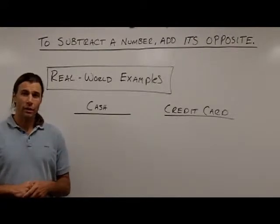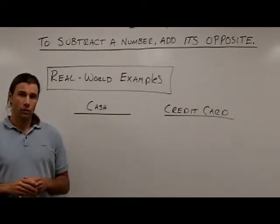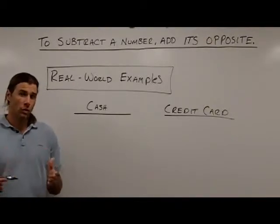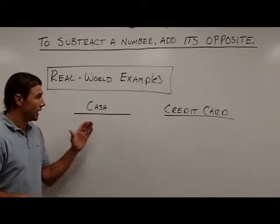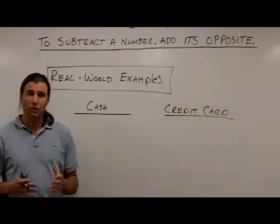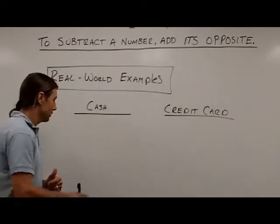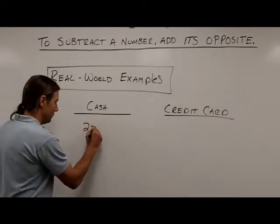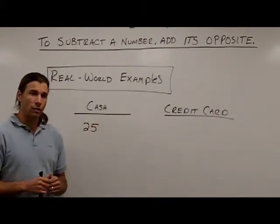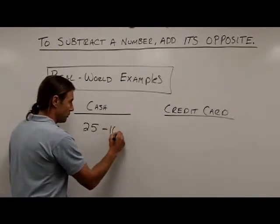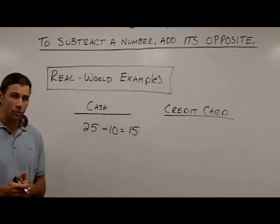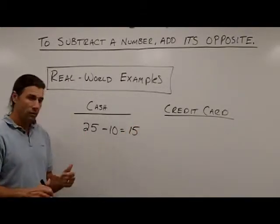So you might be wondering how this works in the real world. A great example for why subtracting a number is the same as adding a number's opposite deals with going to the store and either purchasing something with cash or using a credit card. Let's say my net worth is $25 — I have $25 to my name, all in cash. I go to the store and make a purchase for $10, subtracting $10 from my net worth, and I'm going to have $15 left over. There's an example of subtraction — paying with cash.